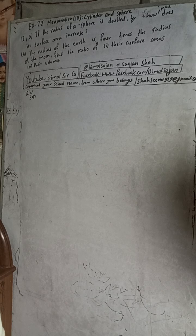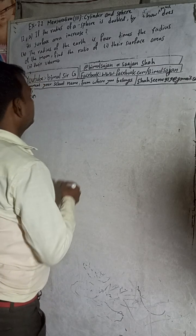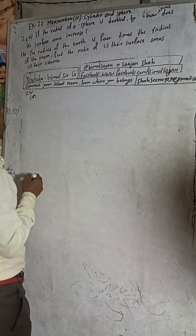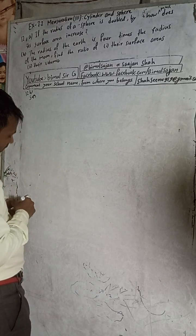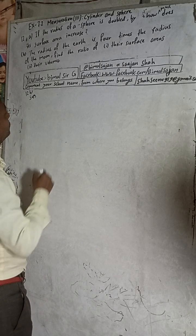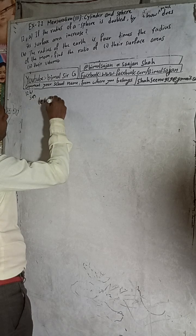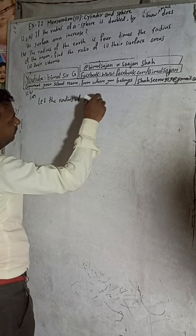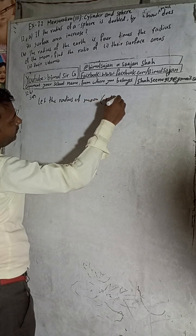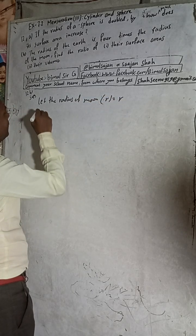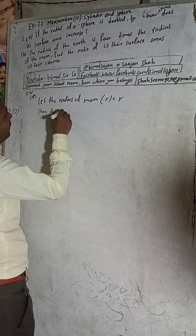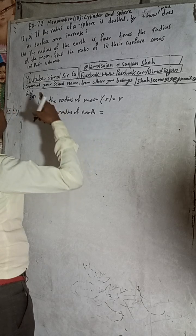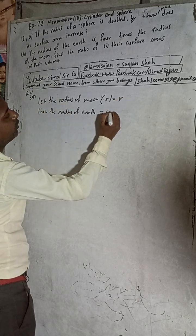The radius of the Earth is 4 times the radius of the Moon. Let the radius of the Moon be equal to R. Then the radius of the Earth is 4 times R, that is 4R.